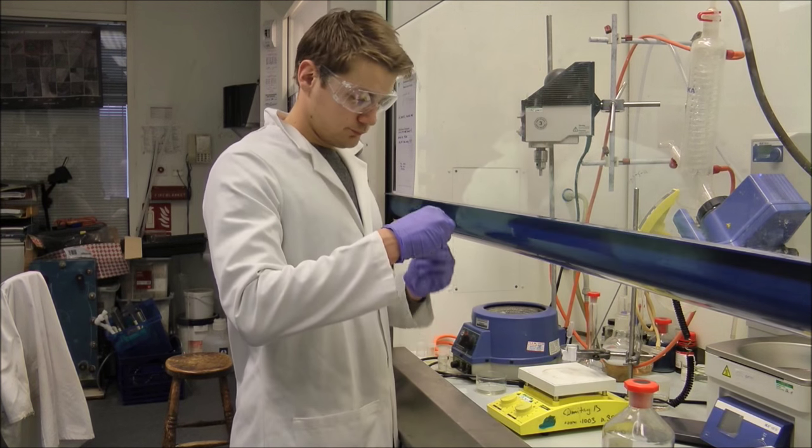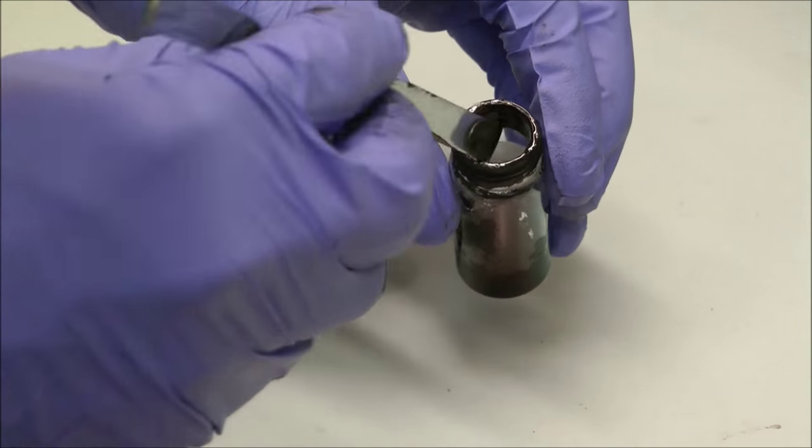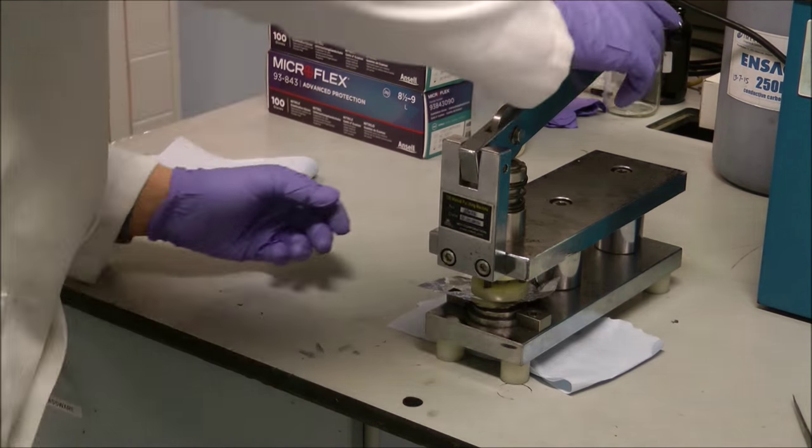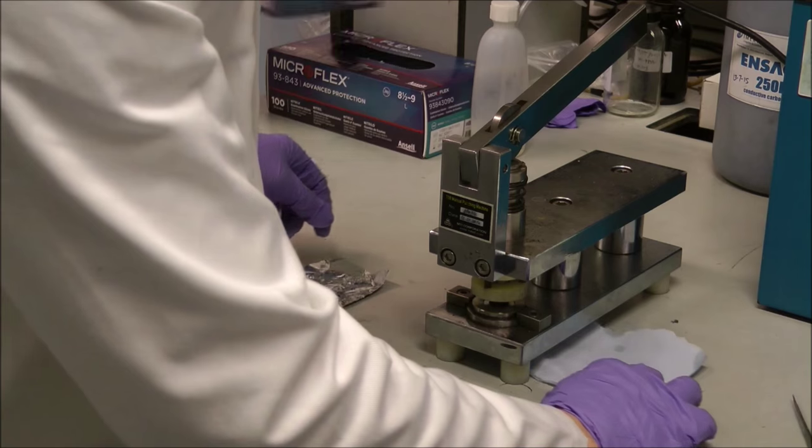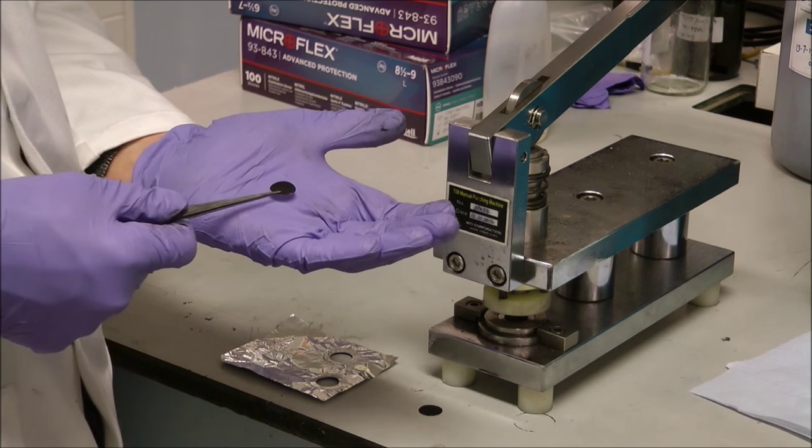When the ink is formed it can then be deposited as a thin film onto current collecting foil. After the film has dried, a sheet of electrode material has been made. A punch is then used to give a circular electrode which can fit inside of a coin cell case.